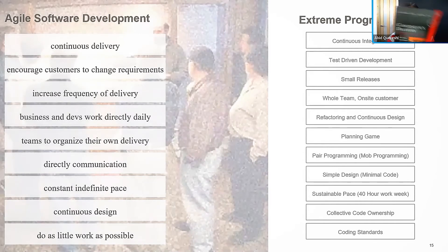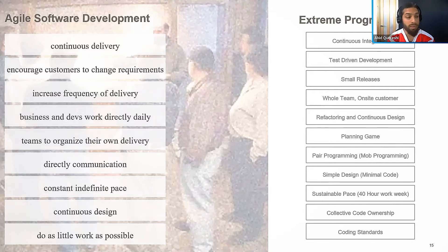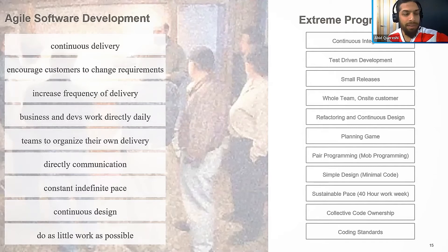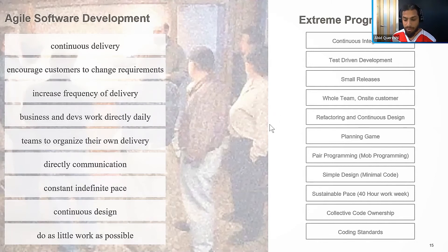The continuous delivery book is about six to eight years old now — that's how quickly things change. Spending a lot of time on specific techniques can become outdated. What I need you to understand is where these ideas came from, so you can determine which techniques will increase your agility and continuous delivery, and which will not.